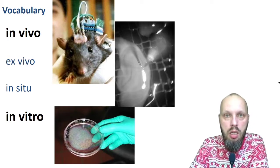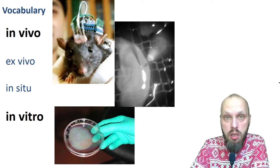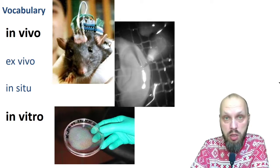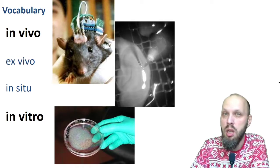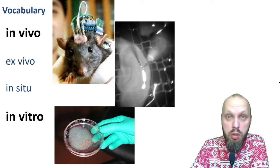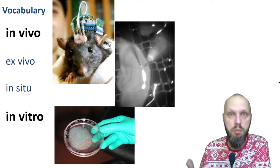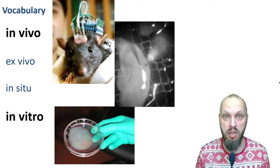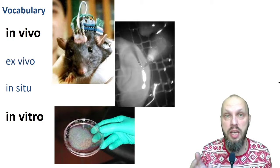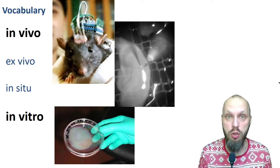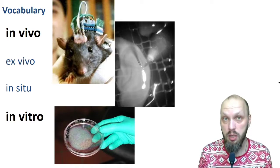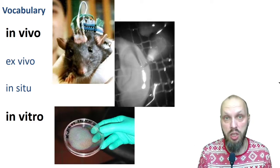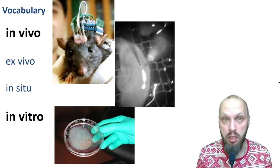There are benefits and downsides to working in vitro versus in vivo with a full animal. Think about in what cases having a full animal is better, and in what cases having some cells living in a petri dish is better — and vice versa: what is bad about having a full animal, and what is bad about having a petri dish?